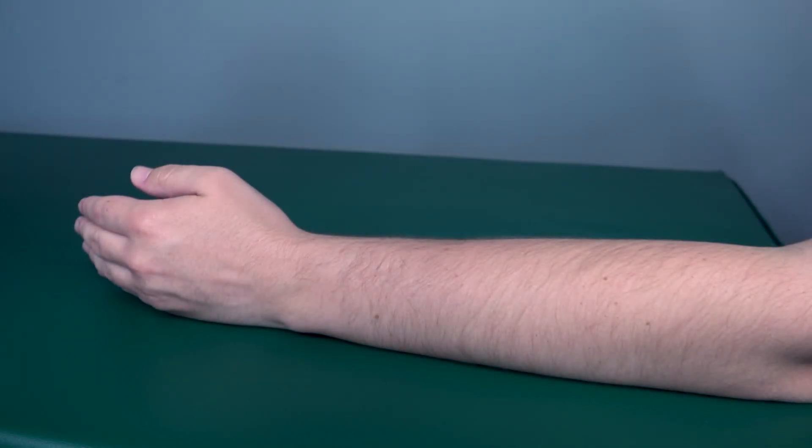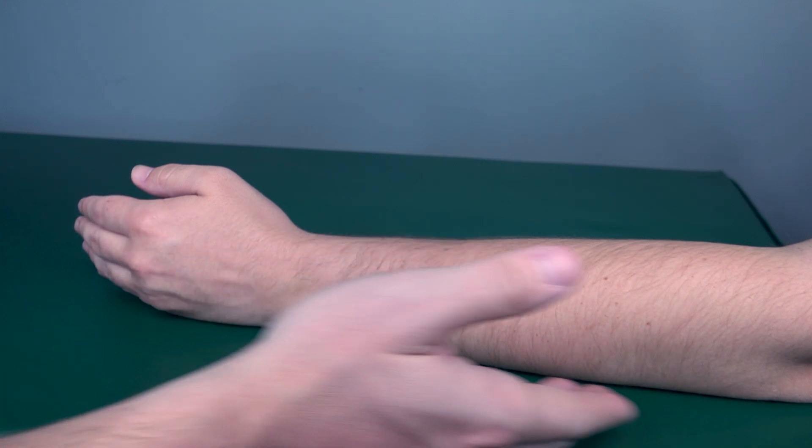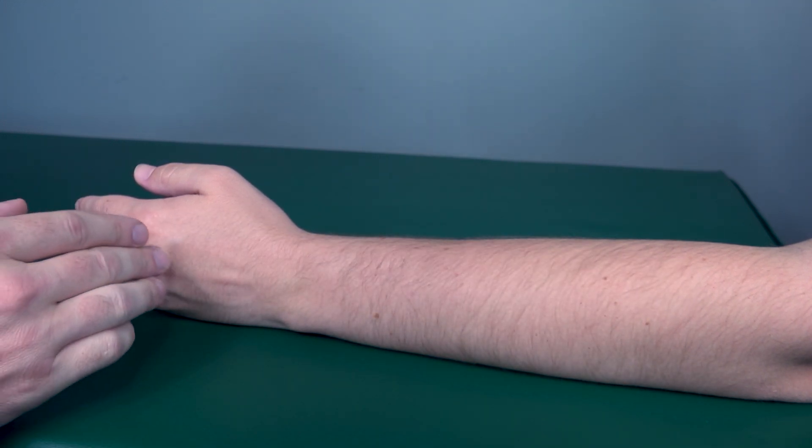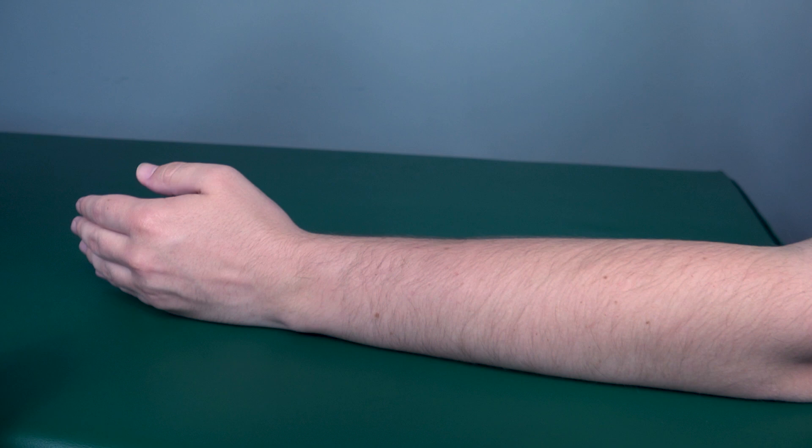Testing wrist extension gravity eliminated position. The patient's forearm will be on a flat surface once again, with the hand in neutral position. What you will have your patient do is perform wrist extension to the best of their ability. So go ahead and do that now.